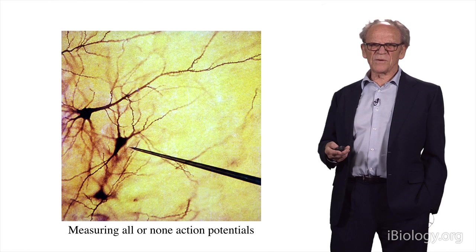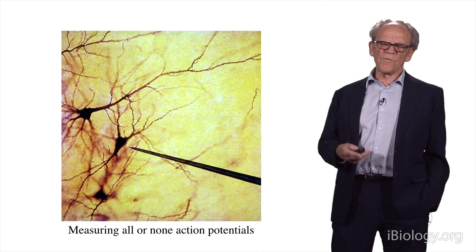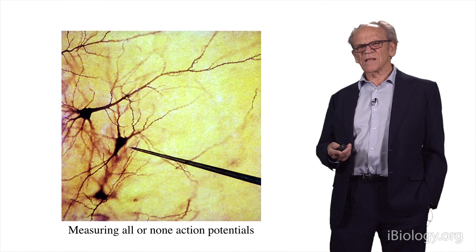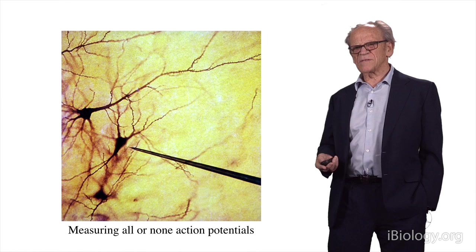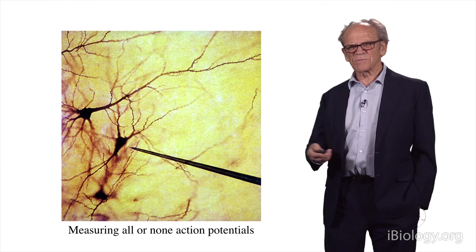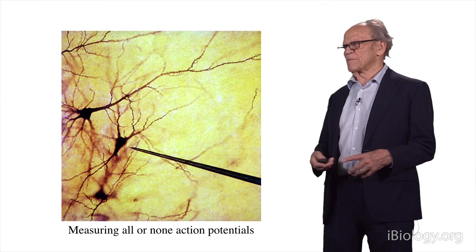The action potential travels down a long process called an axon, then goes to another nerve cell and communicates with it. The information conveyed from one cell to another is through changes in the frequency of the firing of the cell. Once the signal comes to the end of the axon, the transmitter is released, and you have an analog transformation of the digital signal. That's how the nervous system works: digital signaling over distances and analog processing of signals from thousands of inputs.